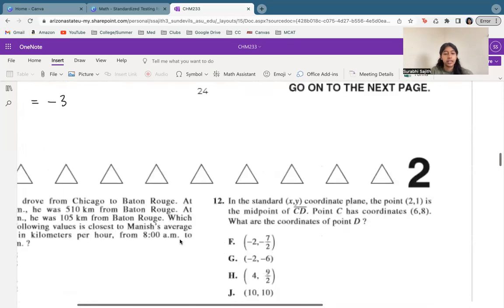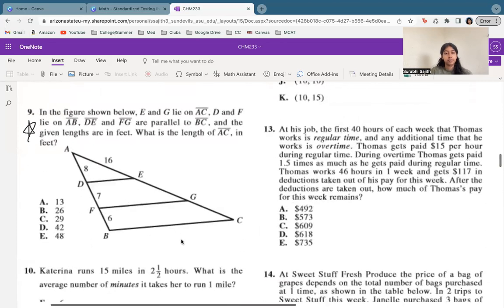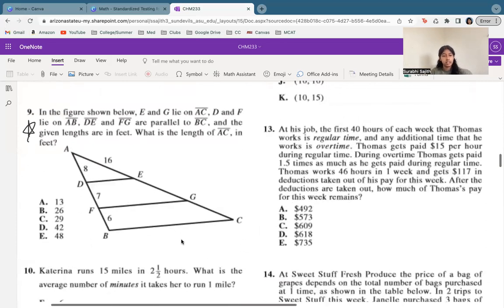All right, we're going to jump down here to 9. So we know that DE and FG are all parallel with BC. So if they're parallel, that means we're going to have the same ratios for everything. Now in this case, we see that with AD we have 8 and then AE is 16. So now we see it's a 1 to 2 ratio.